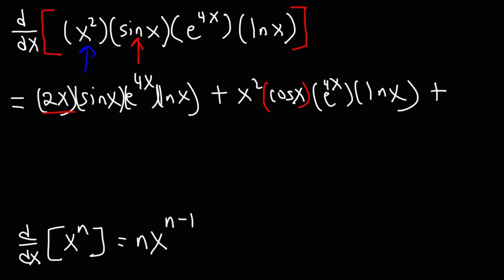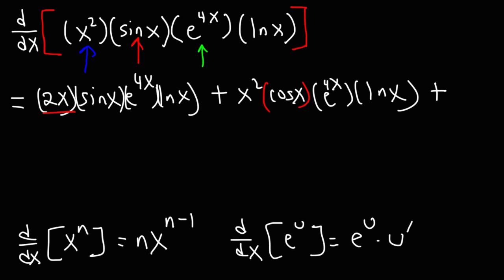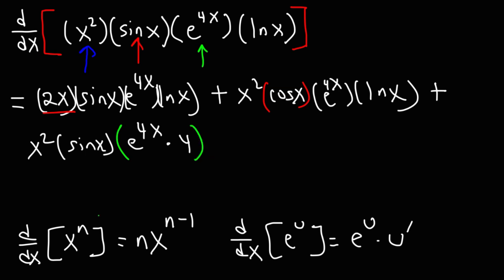Next, we're going to take the derivative of e to the 4x. The derivative of e raised to u with respect to x is e to the u times the derivative of u, which is u prime. The first two parts remain the same — x squared times sine x — and the derivative of e to the 4x is e to the 4x times the derivative of 4x, which is 4. Then times the last part, the natural log of x.